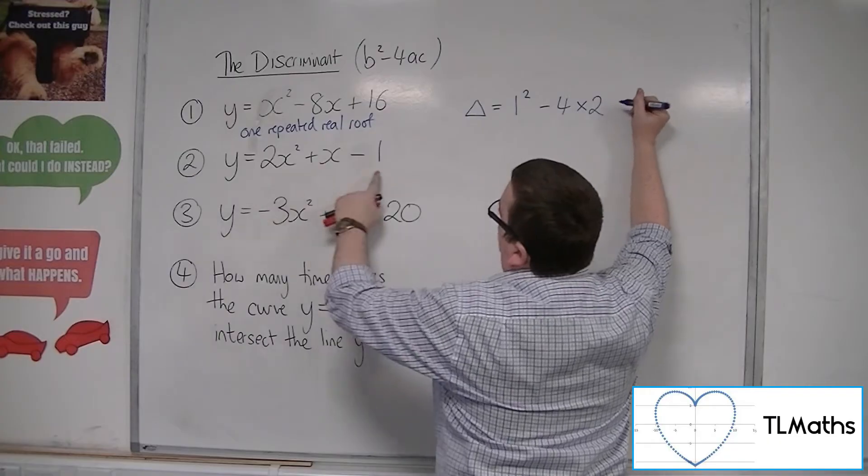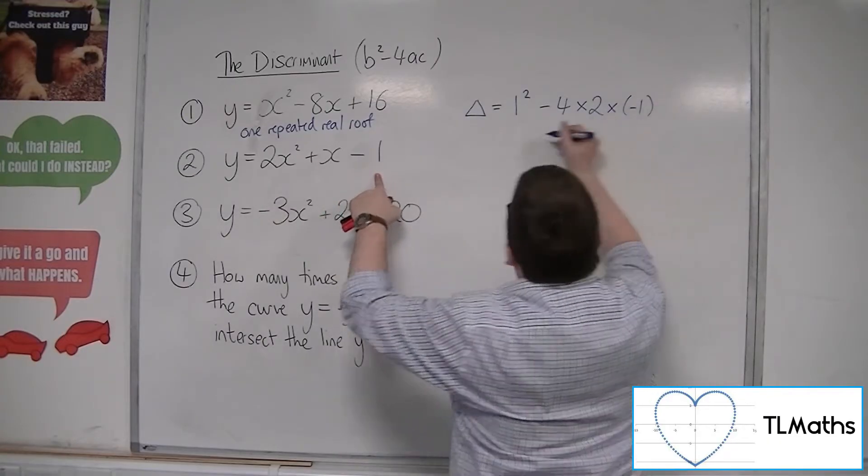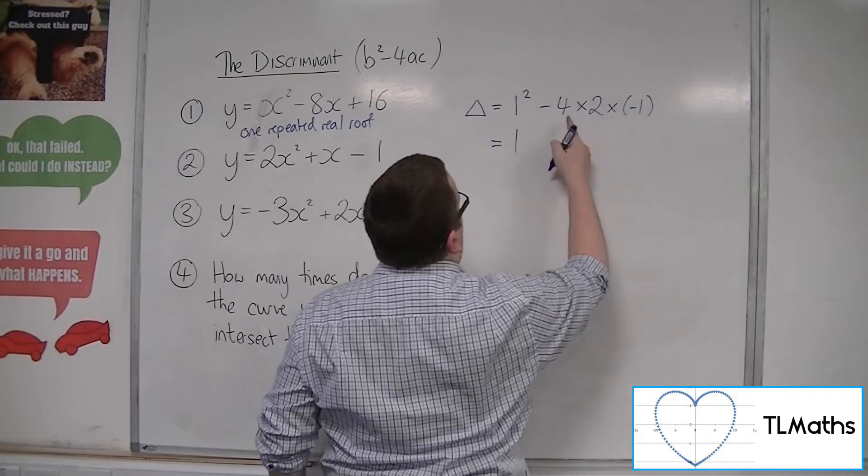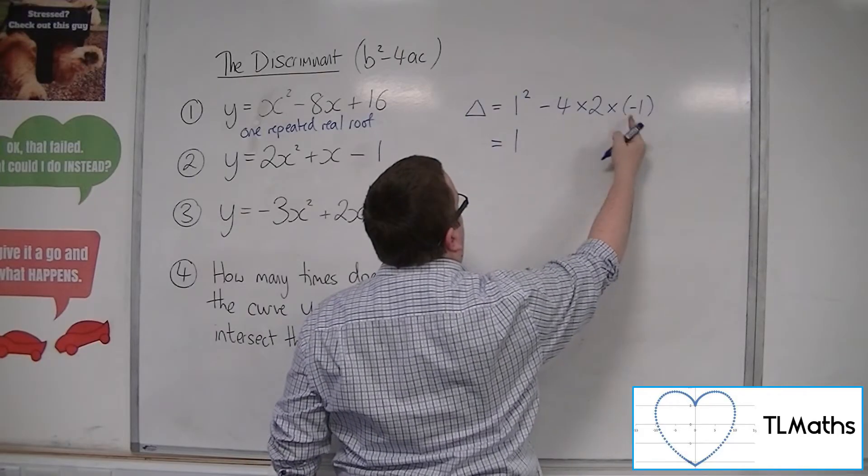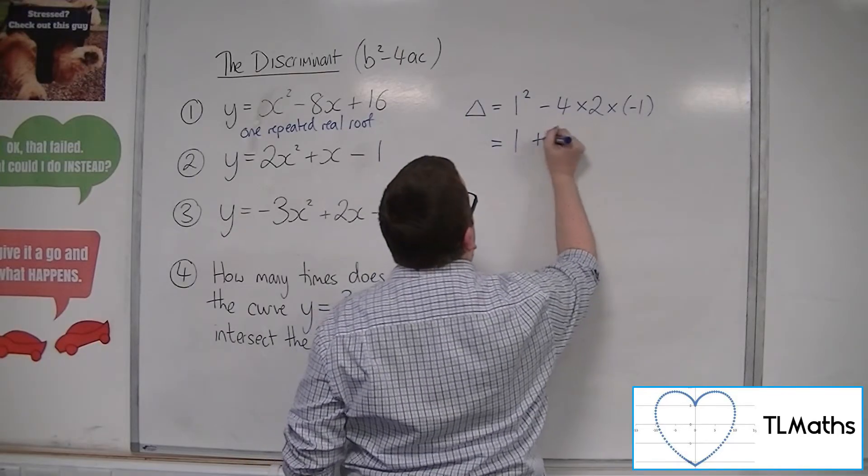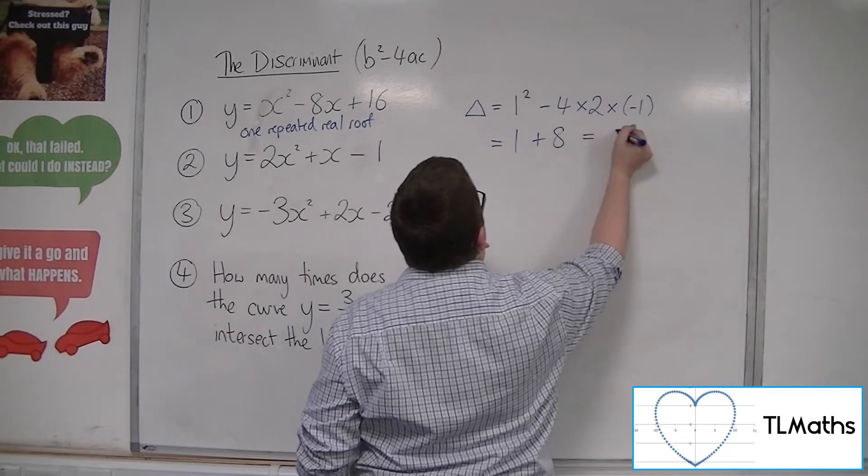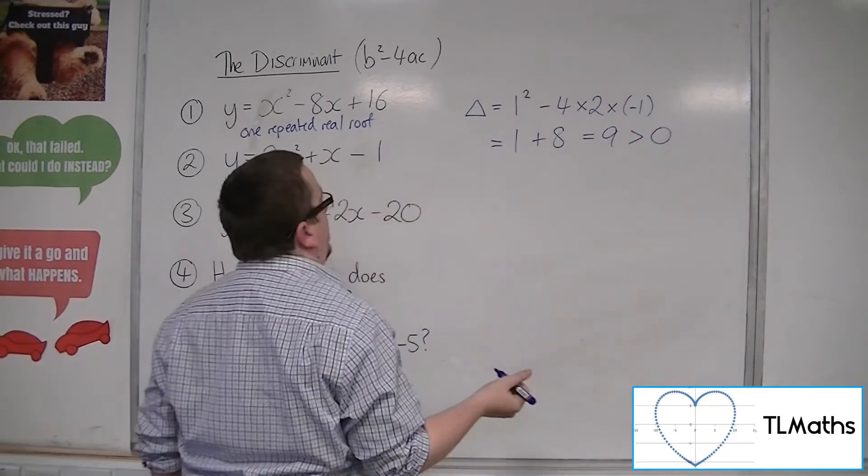Take away 4 times 2, the a, times by c, the minus 1. So we have 1 minus 4 times 2 is minus 8, times by minus 1 is plus 8. And so we get 9. Now, 9, of course, is greater than 0.